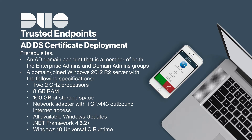You also need a Windows Server 2012 R2 machine joined to your Active Directory domain. We recommend that the Windows Server 2012 system have two 2GHz processors, 8GB of RAM, and 100GB of disk space. In addition, you need a single network adapter with TCP 443 outbound internet access. Ensure that your server has all Windows updates, .NET Framework 4.5.2 or later, and the Windows 10 Universal C runtime installed.